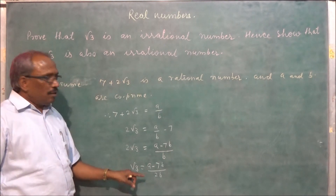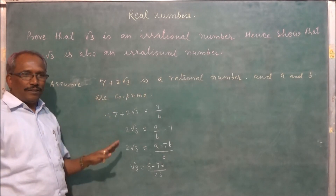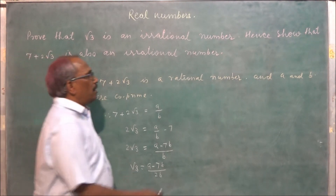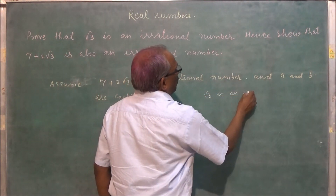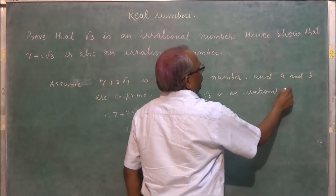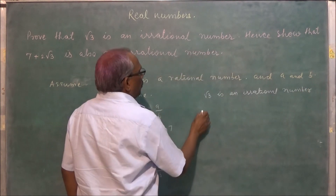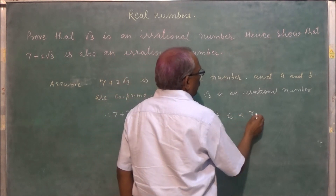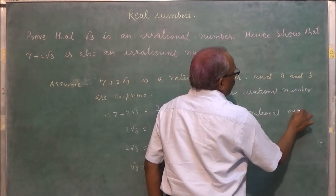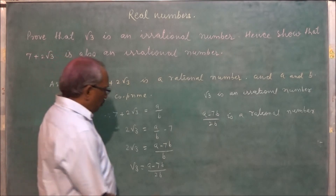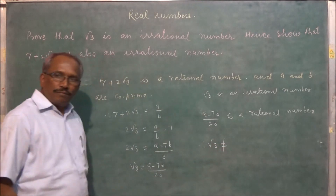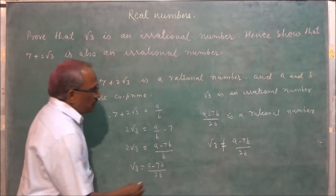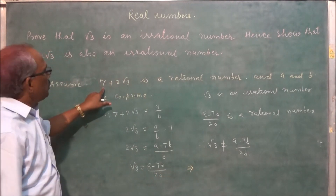This is not possible, which means what we have assumed is wrong. Root 3 is an irrational number, but a minus 7b upon 2b is a rational number, so root 3 cannot equal a minus 7b upon 2b. Therefore 7 plus 2 root 3 is an irrational number.